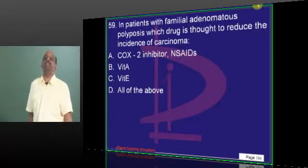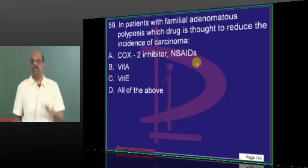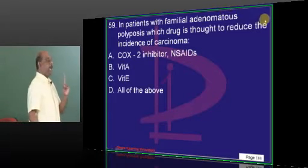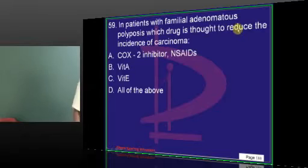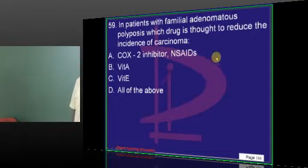Familial adenomatous polyposis is there. You want to reduce the chance of it converting into carcinoma. Actually, you can't prevent conversion by whatever means. Why? If at all there is one condition with 100% chance of converting into carcinoma, it's FAP.